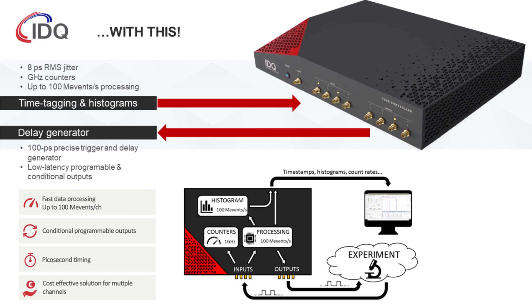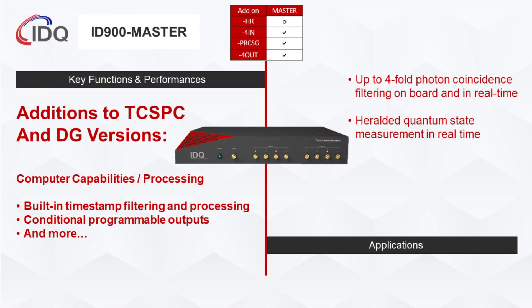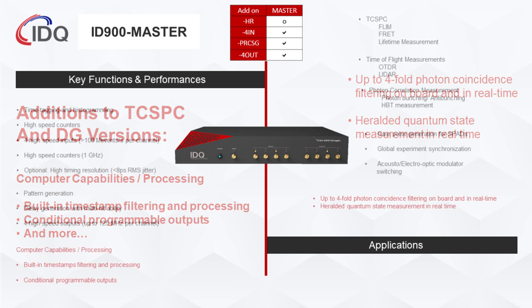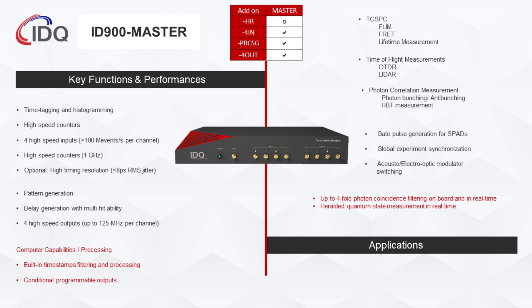Time-correlated single-photon counting and a delay generator combined for the first time in one device, capable of monitoring and synchronizing your whole experiment with picosecond levels of precision. This version can be used for all the applications that can be performed with the TCSPC and DG versions previously described. Additionally, thanks to its onboard processing, the Master version can be used for photon coincidence filtering up to four-fold, and also heralded quantum state measurement, all in real time.